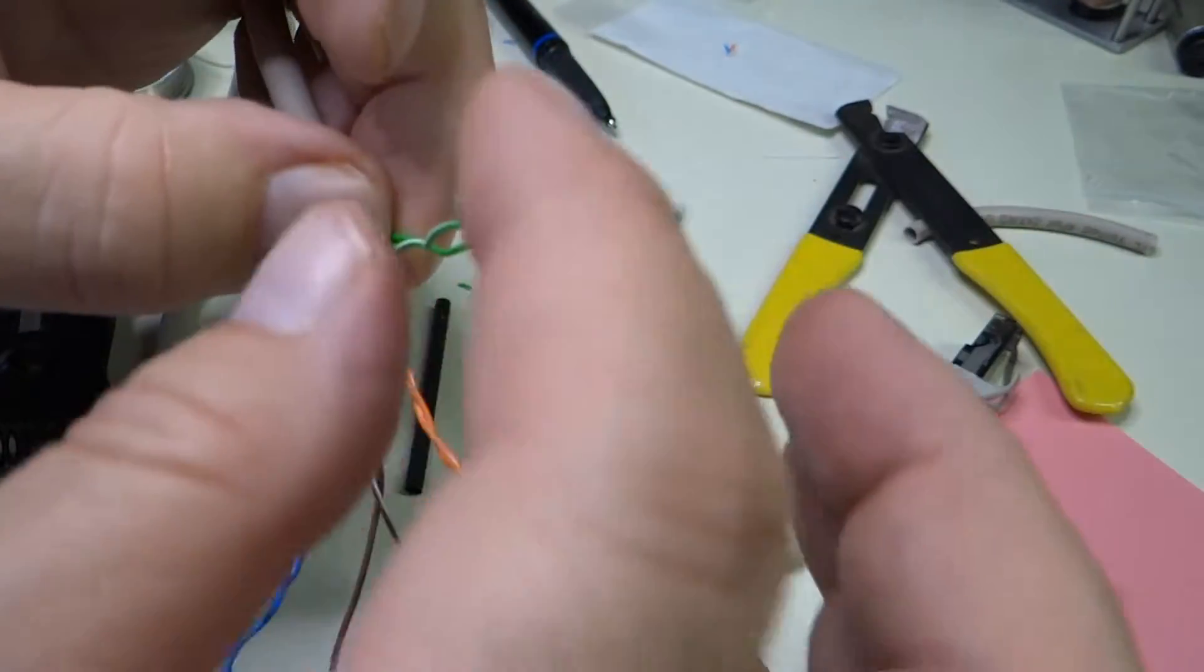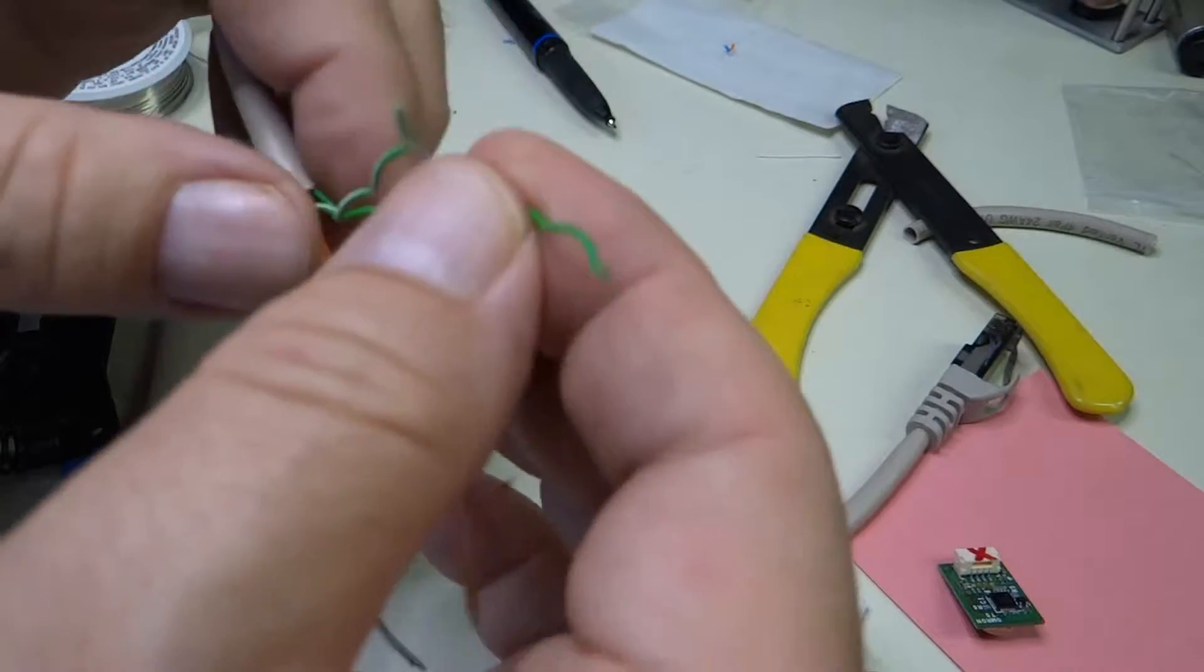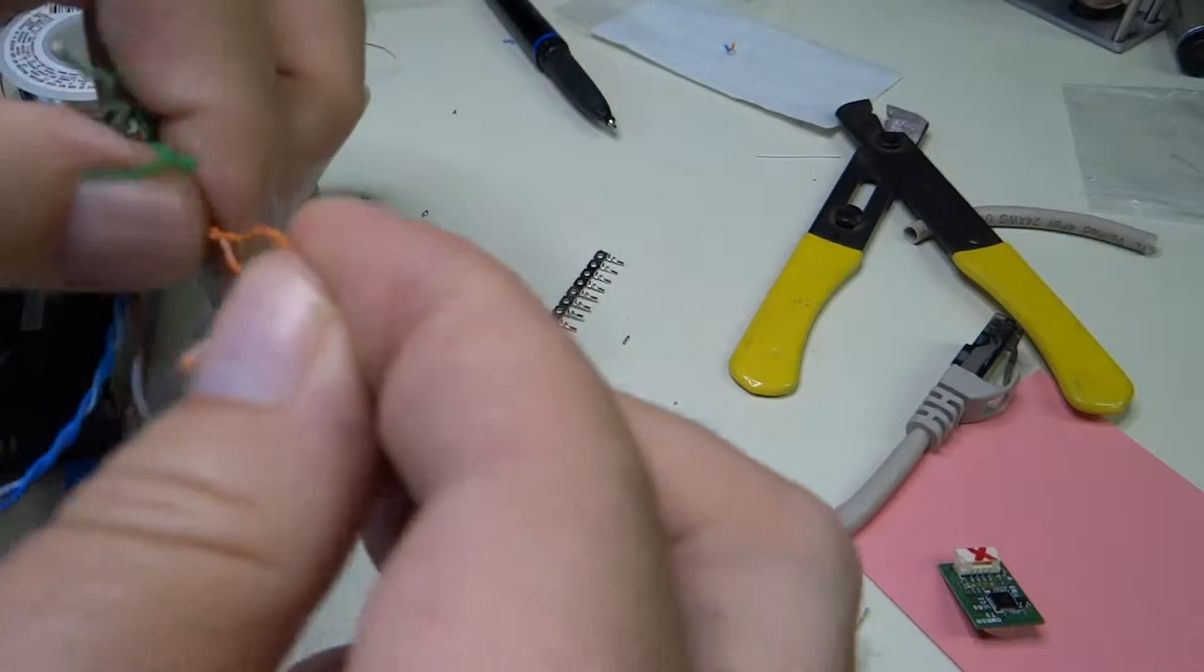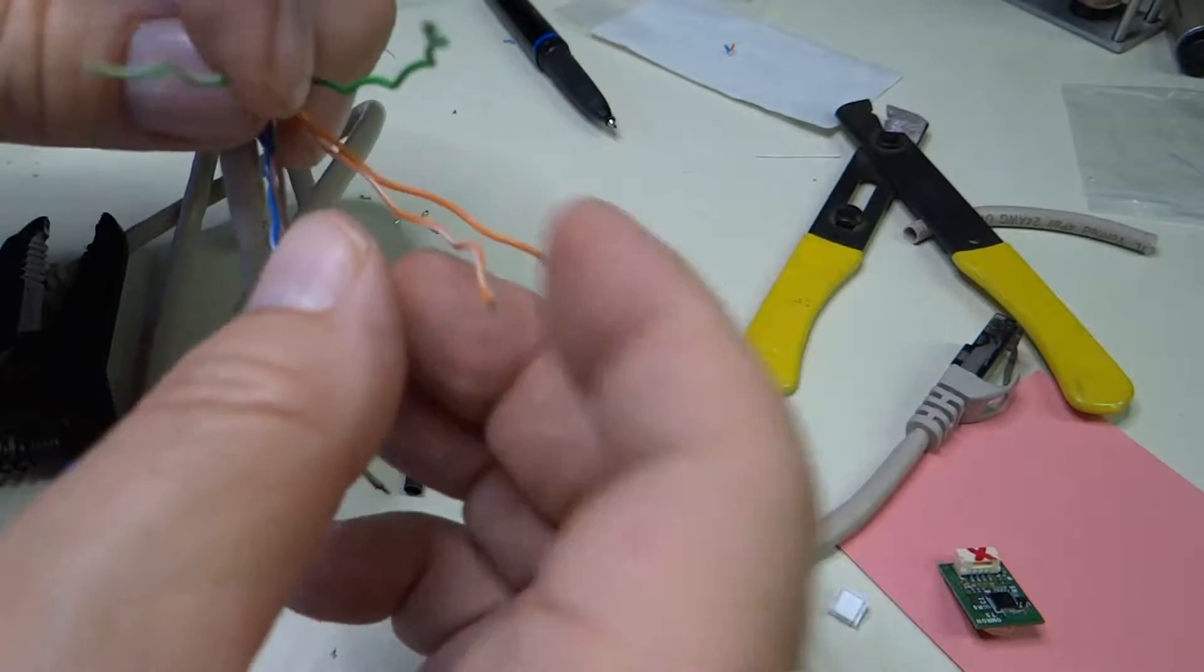So, we're going to cut off all of the grounds and separate them out from the twisted pairs so that we have some length to them.